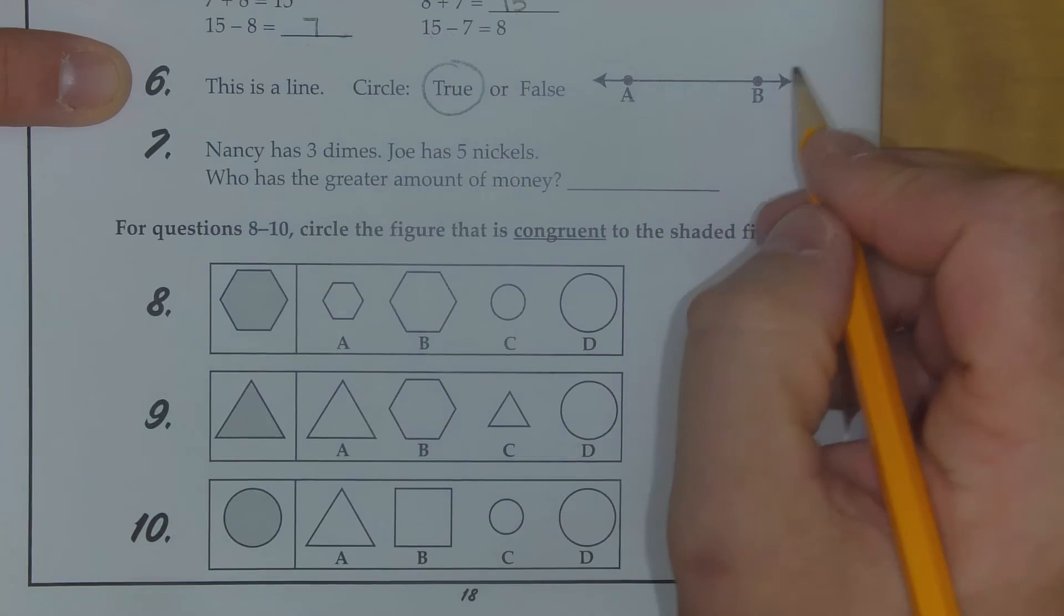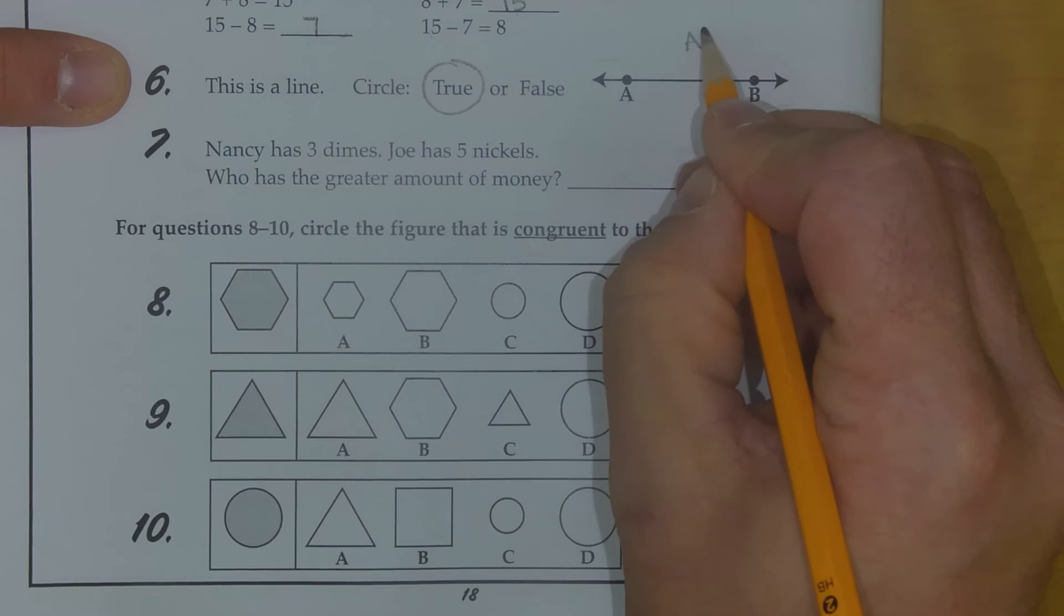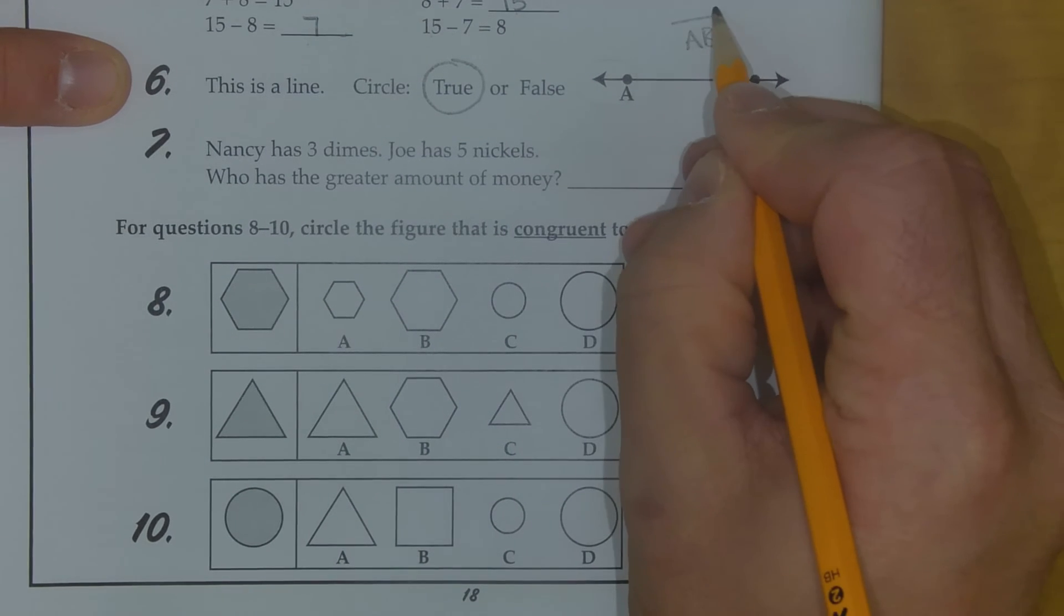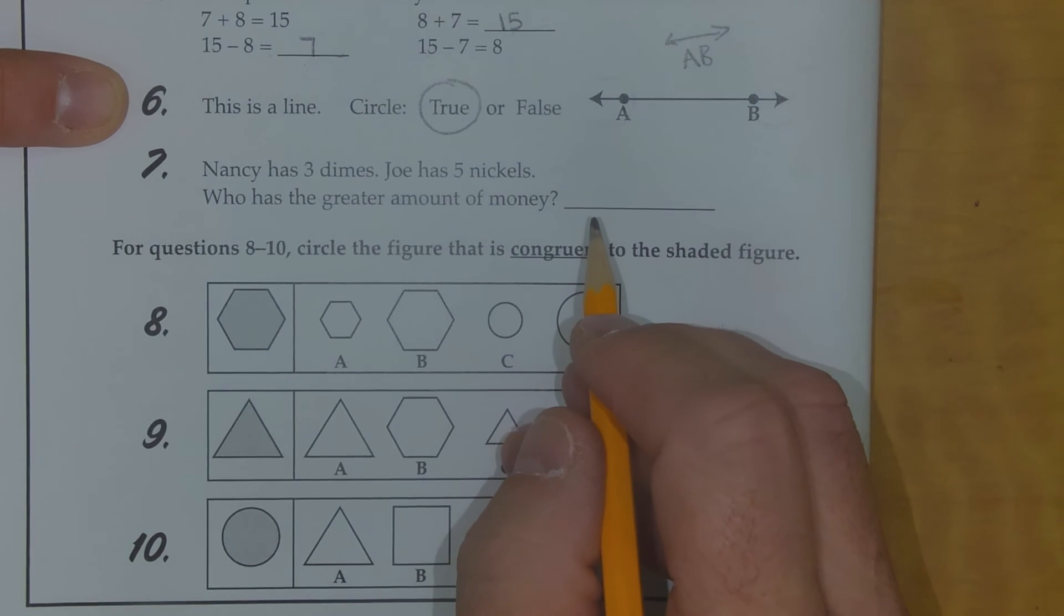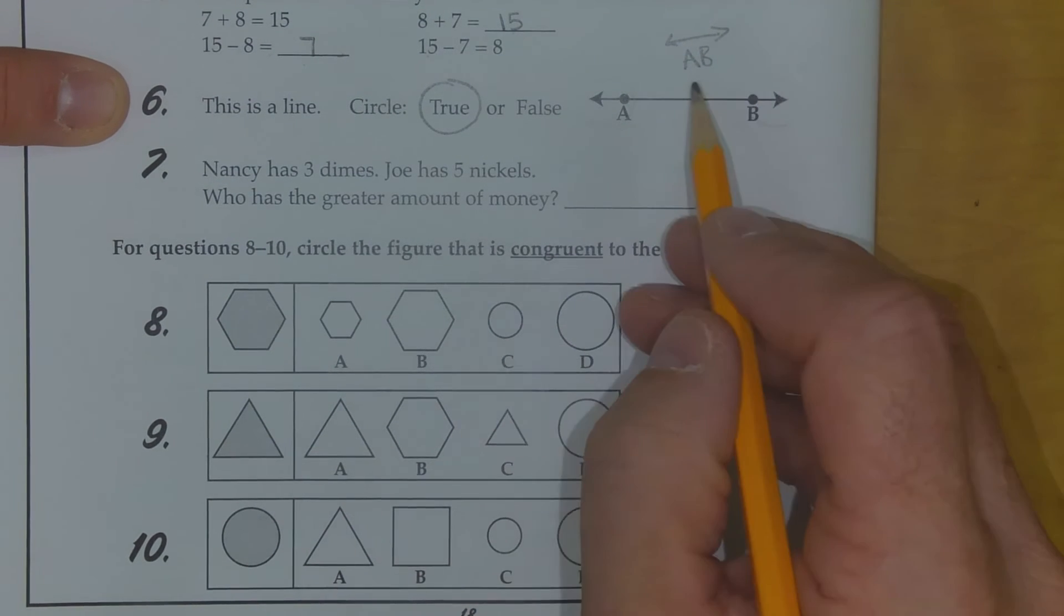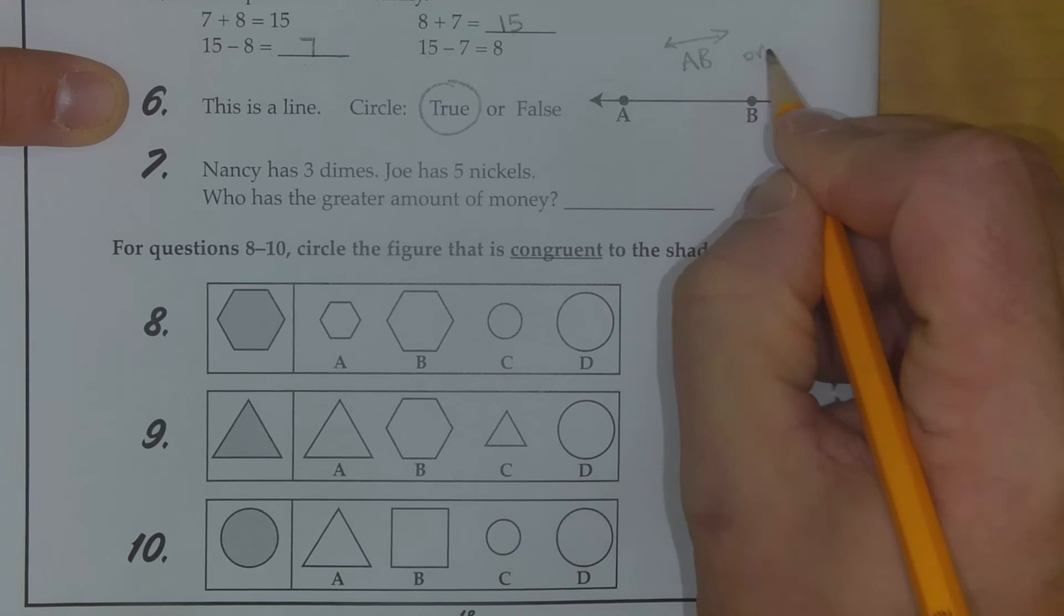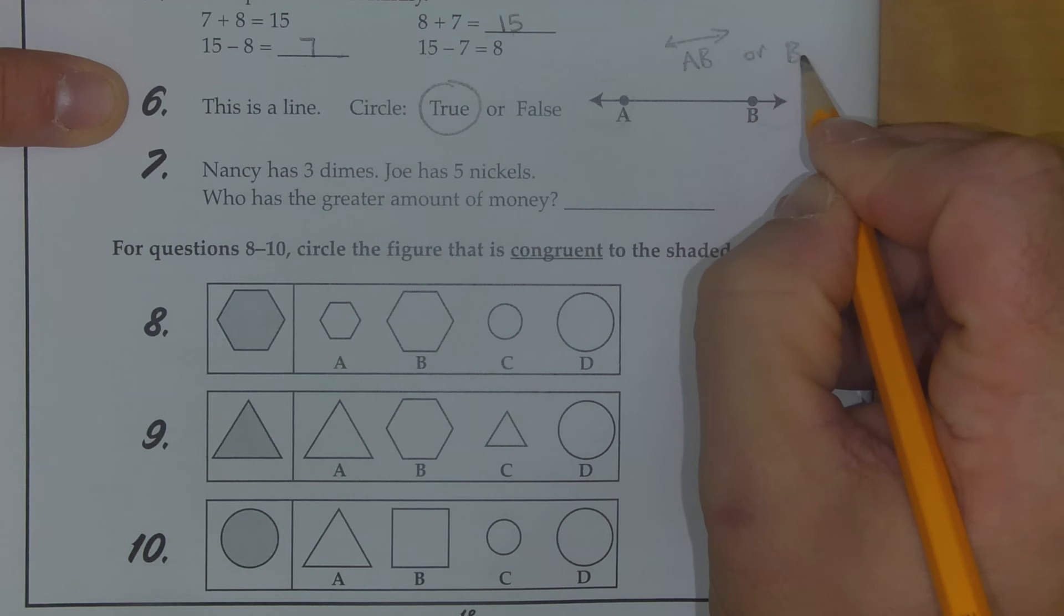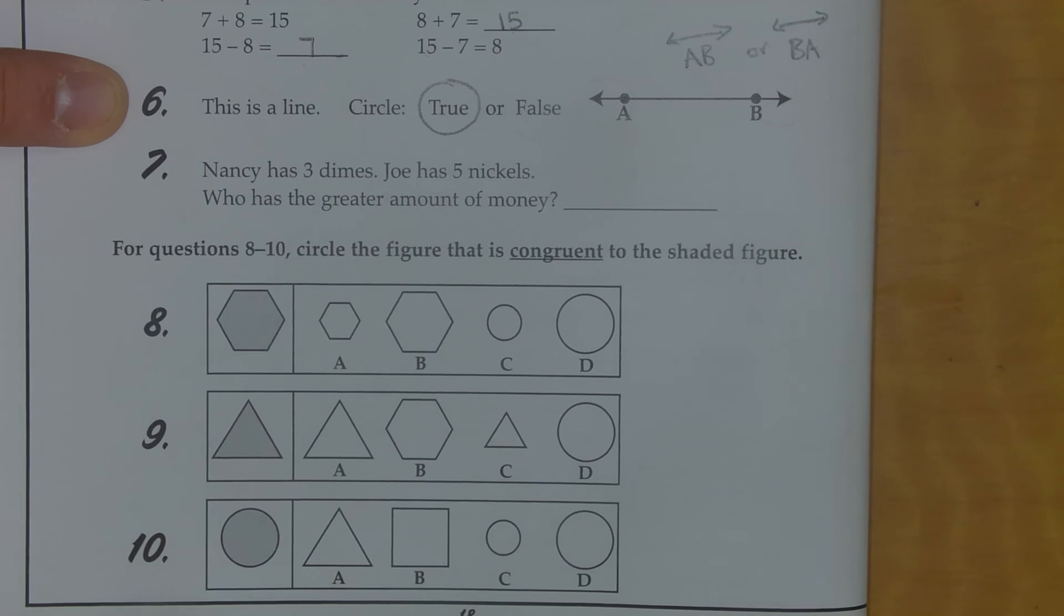And if I want to be specific, this is line A, B. And I would show you that if I were writing using math notations like this. It could be line A, B, or it could be line B, A. Because lines and line segments, you can either read forward or you can read backward. So those are the names of my line.